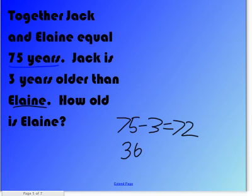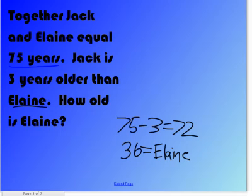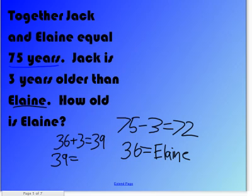And then, that means Elaine is 36 years old. Elaine is 3 years younger than Jack. So 36 is how old Elaine is, and then we have to add 3 years to get Jack's age. So if you want to find out Jack's age, you do 36 plus 3 equals 39. So 39 equals Jack.